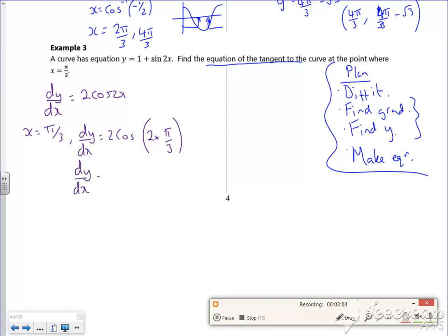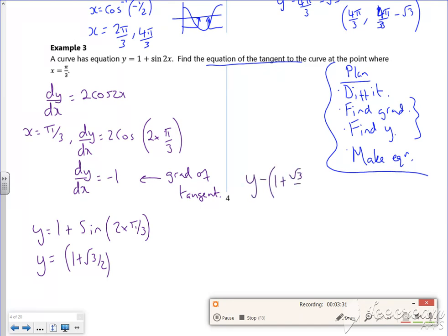I need the y value though. So y is 1 + sin(2 × π/3), which is 1 + √3/2. And then I'm just going to use my equation. So I've got y - (1 + √3/2) = -1(x - π/3). It looks really messy, but it's not that bad really.